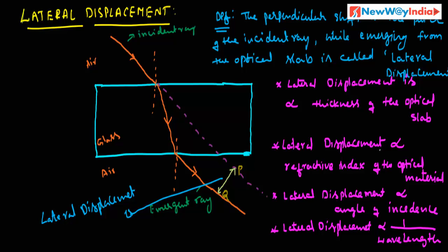The lateral displacement depends on the refractive index of the optical material — here, the optical material is a glass slab, but we can take any other optical material. If you increase the refractive index of the optical material, the lateral displacement also increases. If you take a material with a lower refractive index, the lateral displacement also decreases.